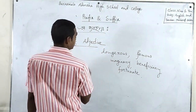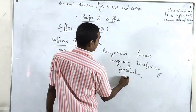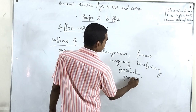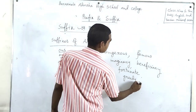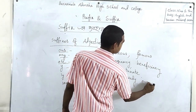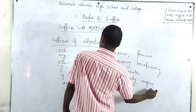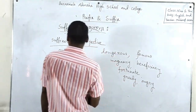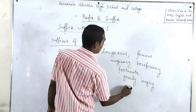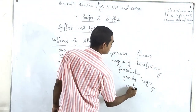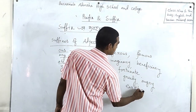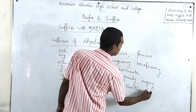This is Y — grady, angry. LY — artly, fully.